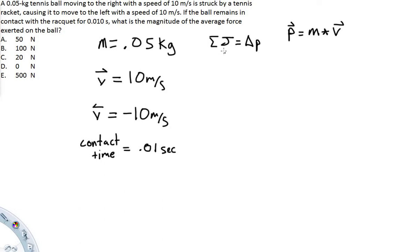The sum of the impulse J is equal to the change in momentum P right here. So we are going to start off by solving for the change in momentum. So that is going to be the momentum is equal to the mass times the velocity.